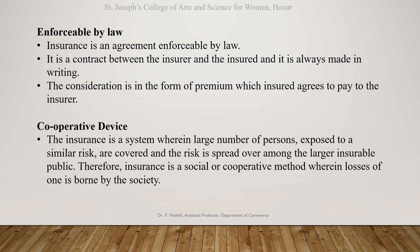The second characteristic is cooperative device. Insurance is a system wherein a large number of persons exposed to a similar risk are covered and the risk is spread over among a large number of the insurable public. Therefore, insurance is a social or cooperative method wherein the loss of one is borne by the society.